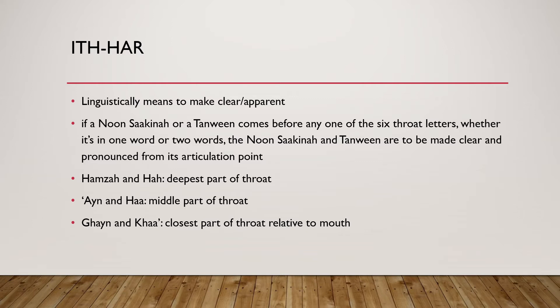The noon sakinah and tanween are to be pronounced from their articulation point. Likewise, the hamza, ha', 'ayn, ha', ghayn, and kha', if they come after the noon sakinah or tanween, are also to be pronounced from their articulation point. Both letters are made clear — this is what is meant by Al-Izhar. The hamza and ha' come from the deepest part of the throat; the 'ayn and ha' from the middle part; and the ghayn and kha' from the closest part of the throat to the mouth.